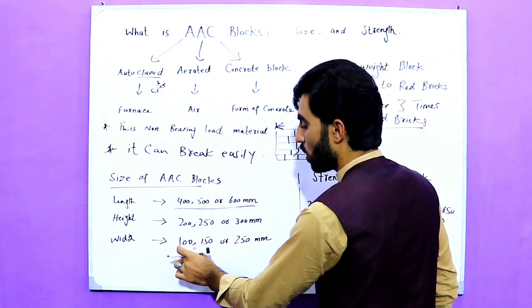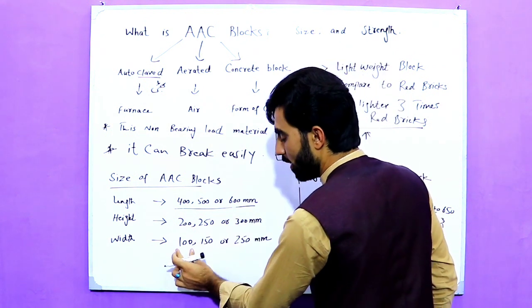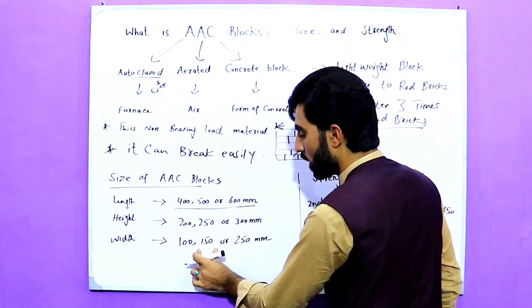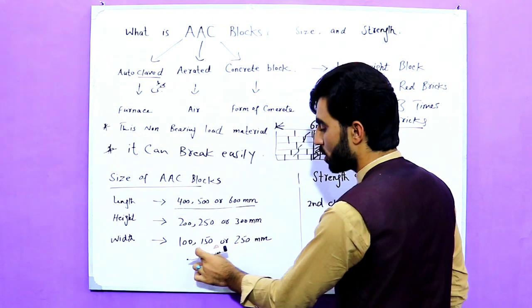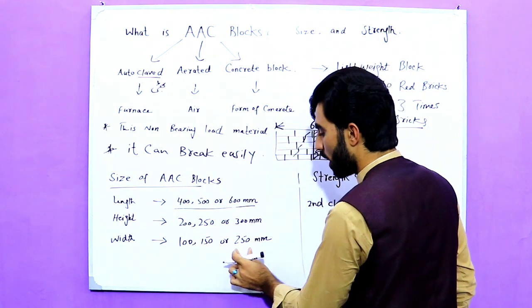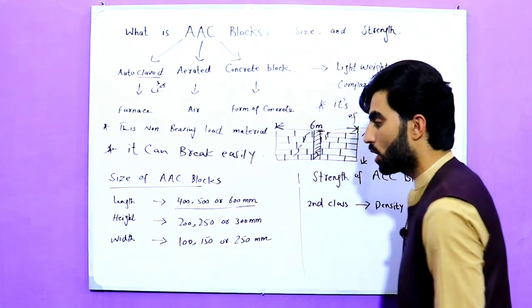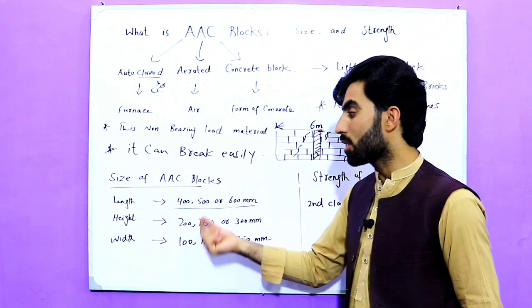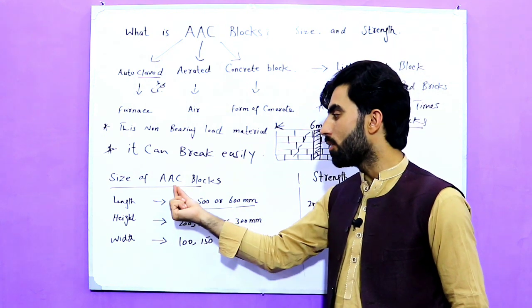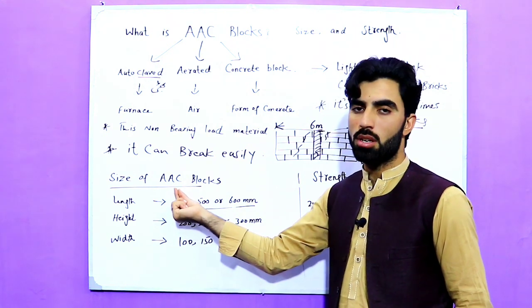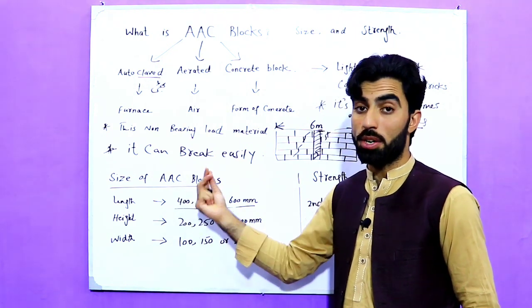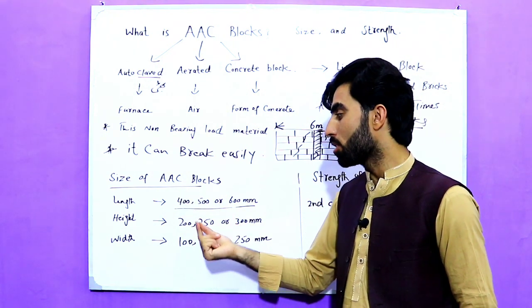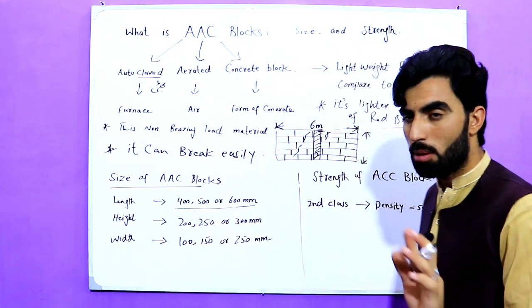For width, the available standard sizes are 100 millimeters, 150 millimeters, or 250 millimeters. These are the standard sizes of AAC blocks, and it depends on which size is best suited for your building.